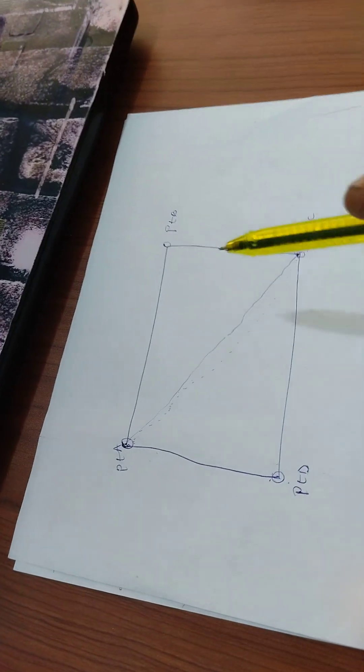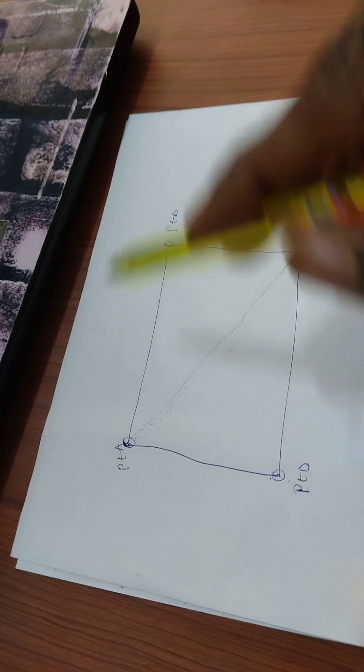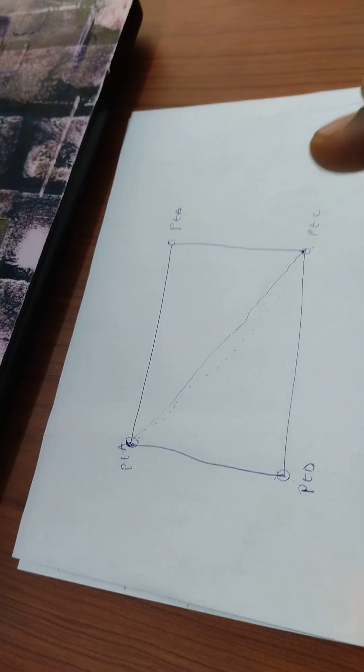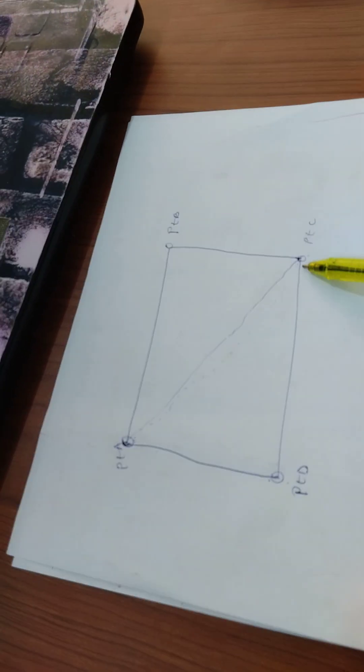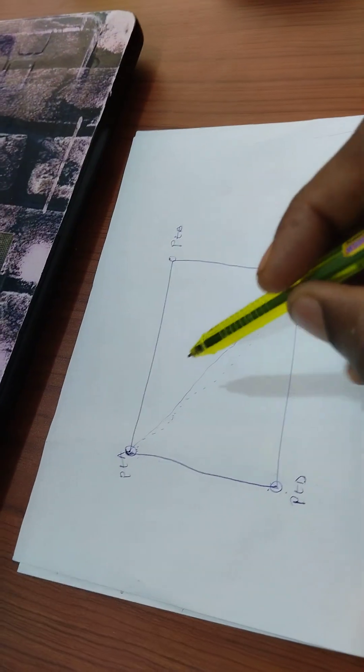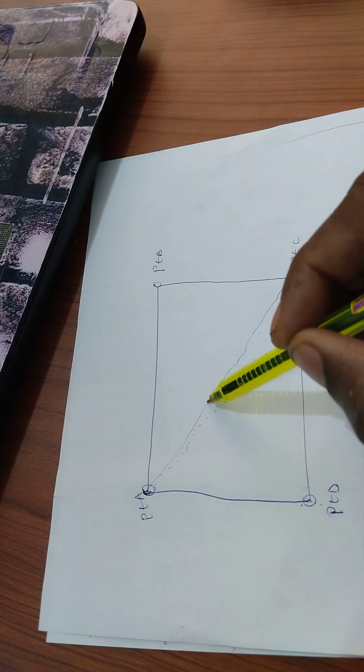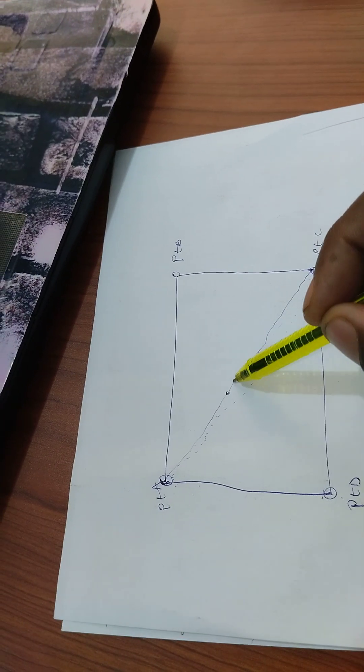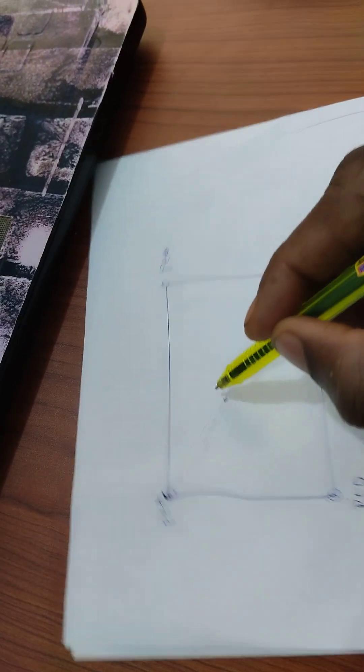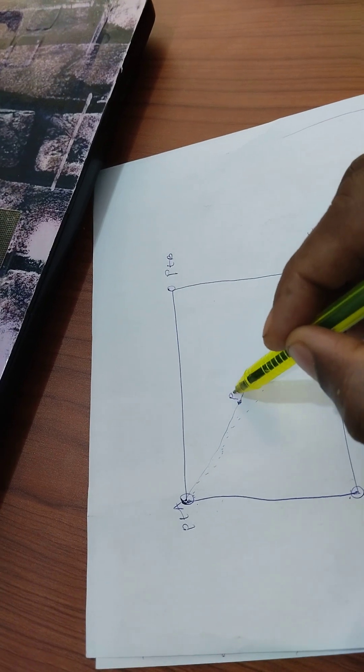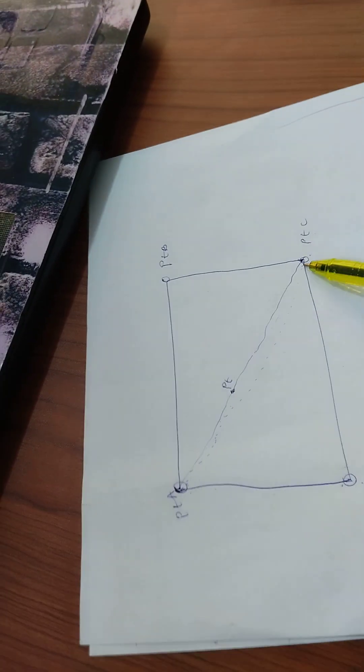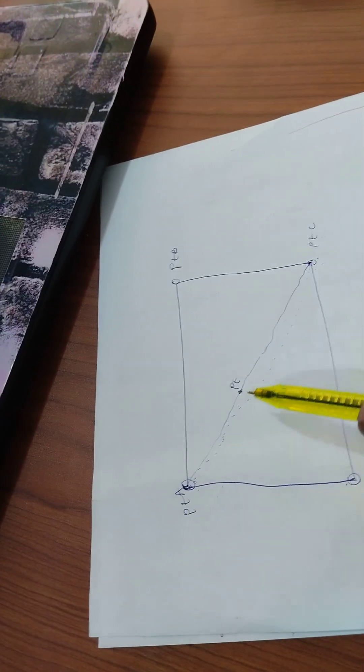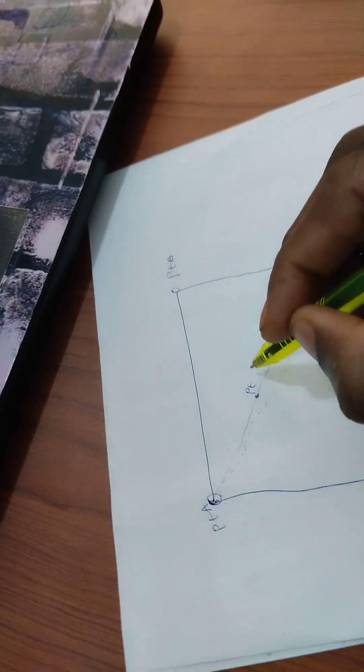And you know the essence of chain survey is that you form a series of triangles inside your site. Now when you are measuring from A to C, you mark point E along the line. When you draw your tape, before you remove the tape, you now mark point E.